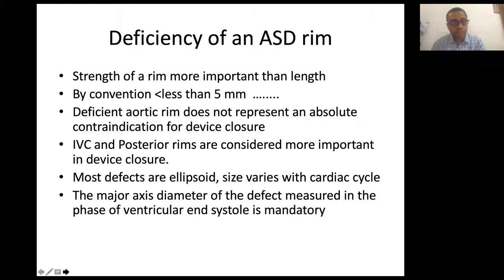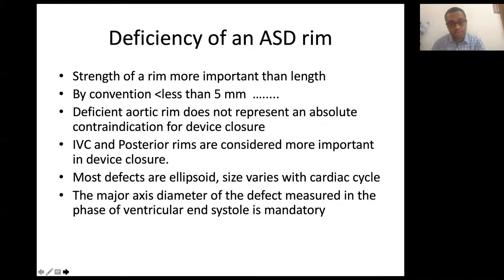The strength of the rim is more important than its length, but unfortunately imaging does not tell us the strength. We can have a rough estimate from tissue thickness and brightness at the IVC, SVC, or posterior margin locations. By convention, a margin of 5 mm is considered good, which holds for the majority but not all cases. There have been cases where 2 to 3 mm margins allowed the device to sit nicely, while 7 to 8 mm margins could not hold the device. Deficient aortic rim does not represent an absolute contraindication for device closure.